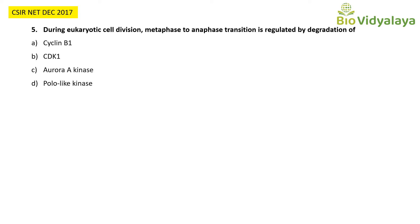Fifth question, from CSIR NET December 2017: During eukaryotic cell division, metaphase to anaphase transition is regulated by the degradation of — option A: cyclin B1; option B: CDK1; option C: Aurora A kinase; option D: polo-like kinase. This question is from the cell cycle. If you know how the transition from one phase to another is controlled, you can easily answer this.